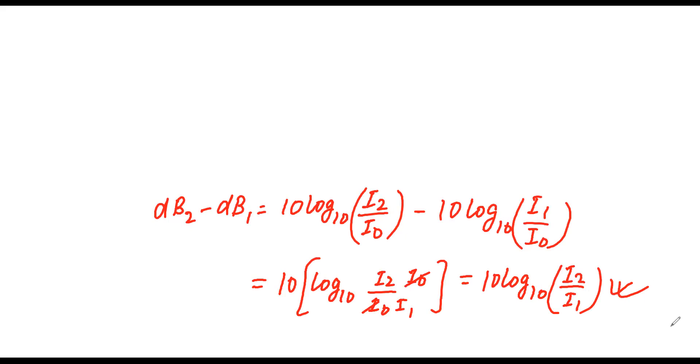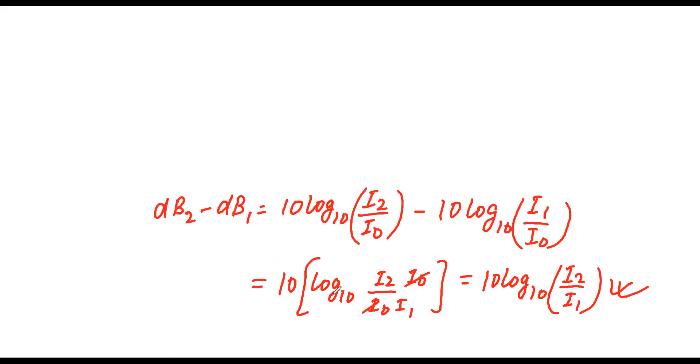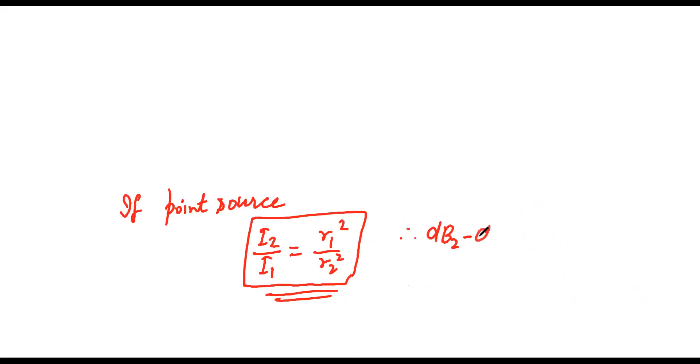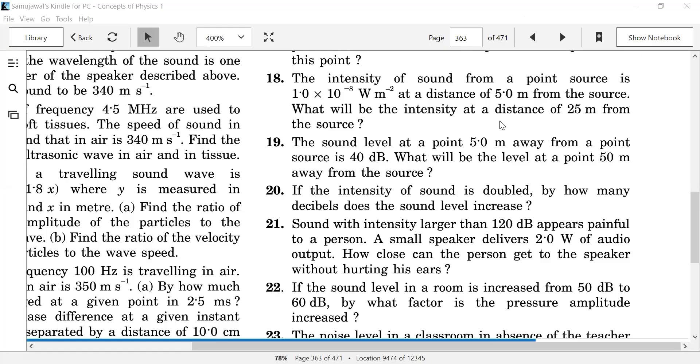If point source, I2 upon I1 equals r1 square by r2 square. So dB2 minus dB1 equals 10 log to the base 10, r1 square by r2 square, where r1 and r2 are the distances from the point source. Now we have the question solved.